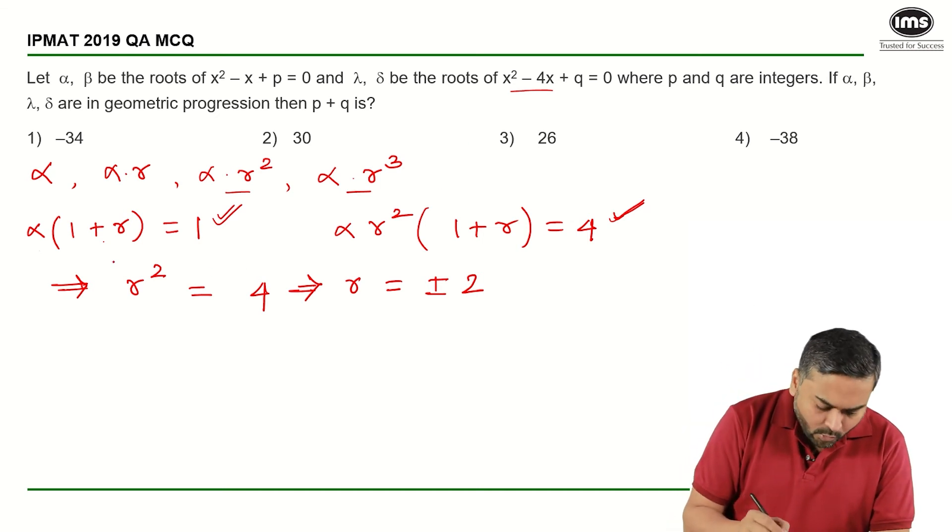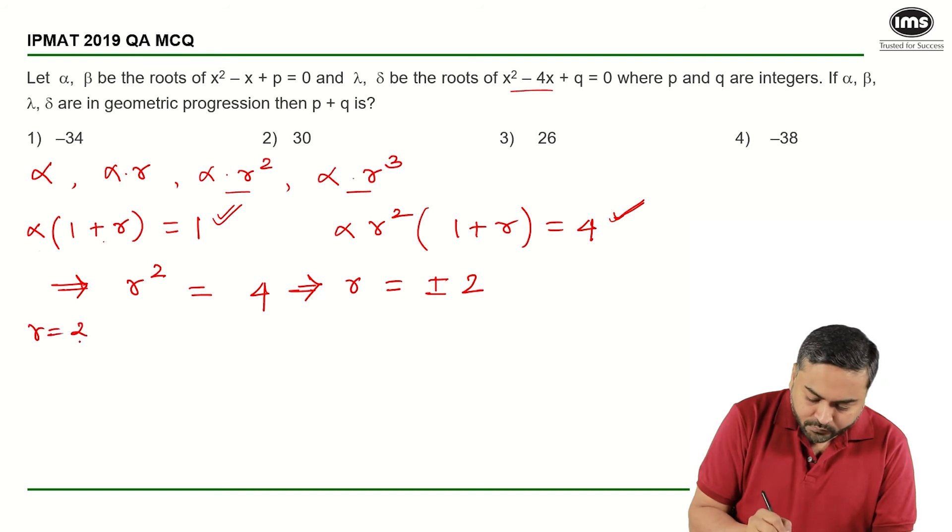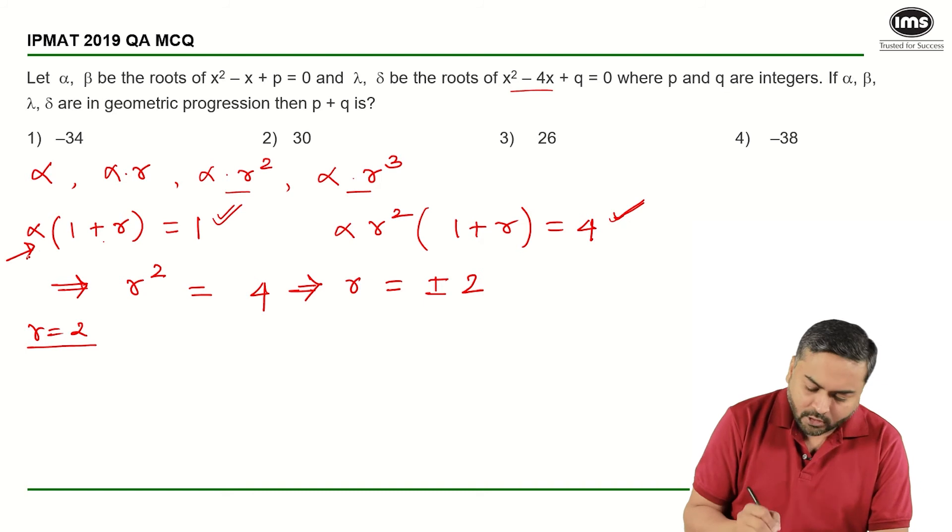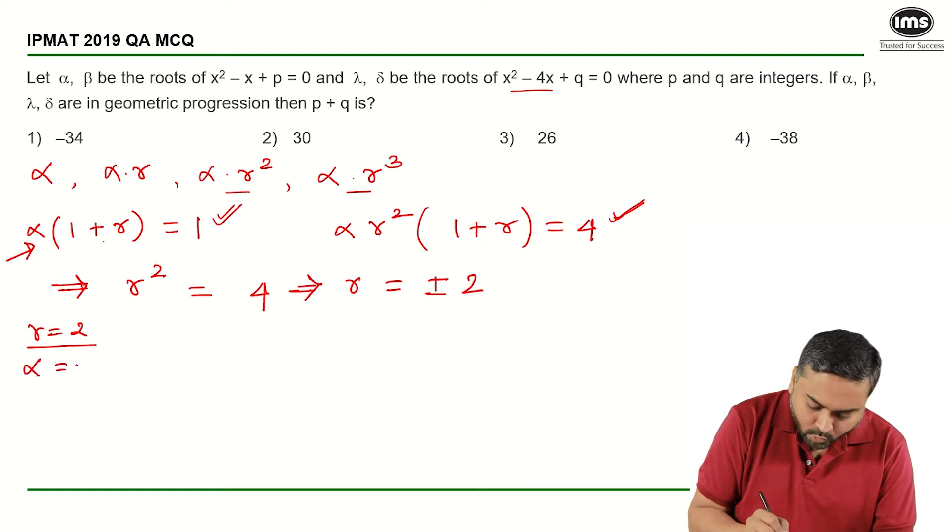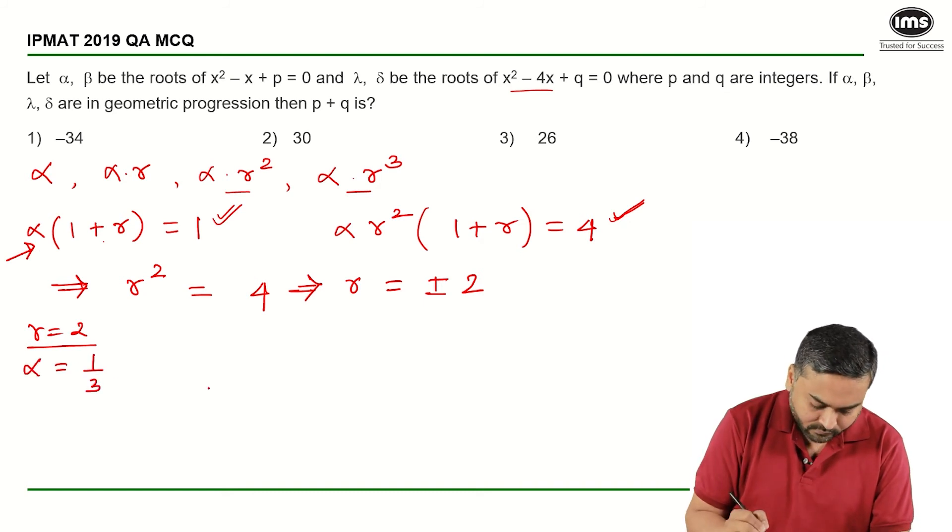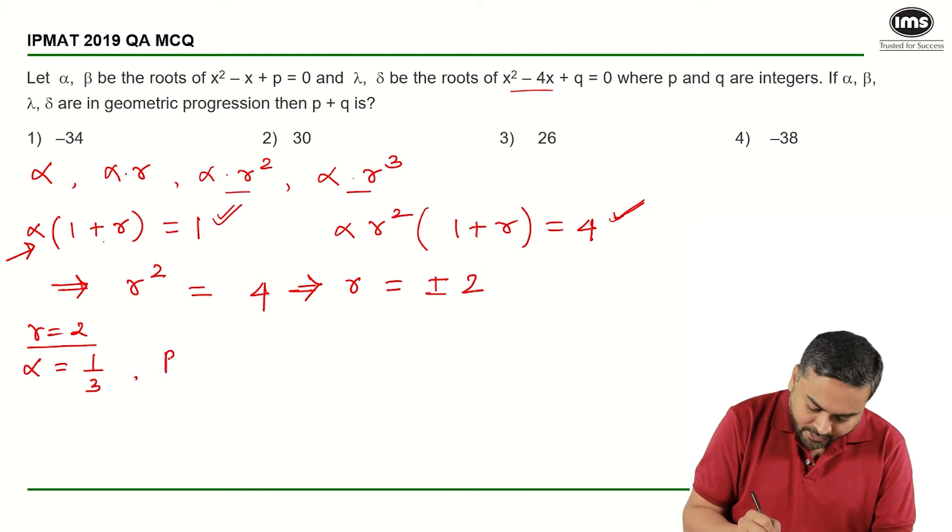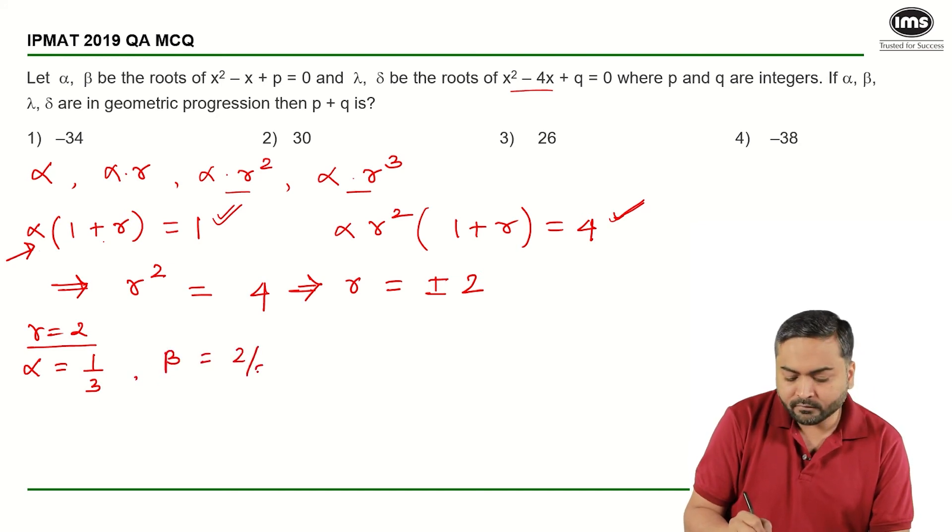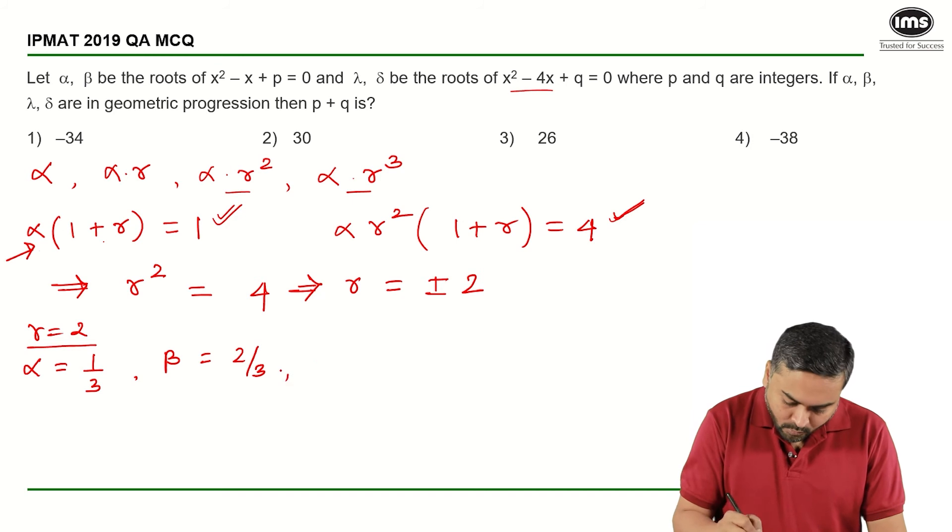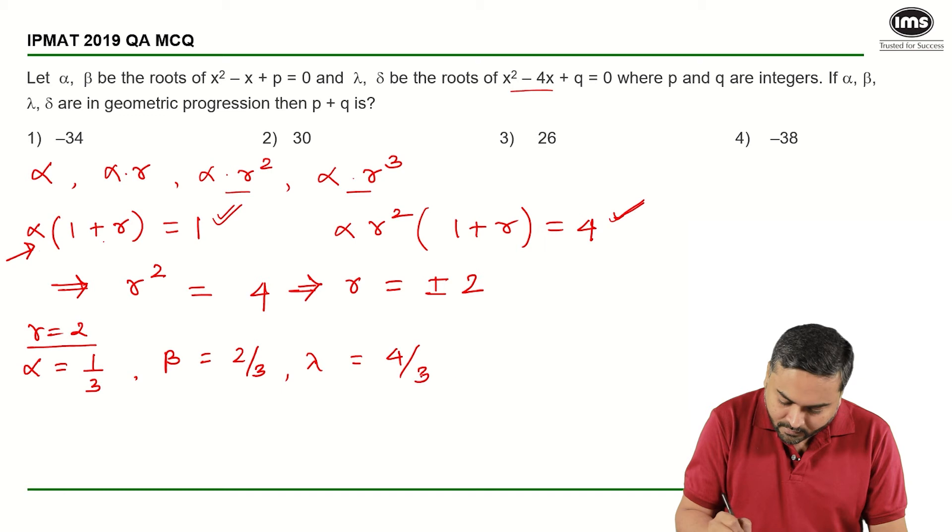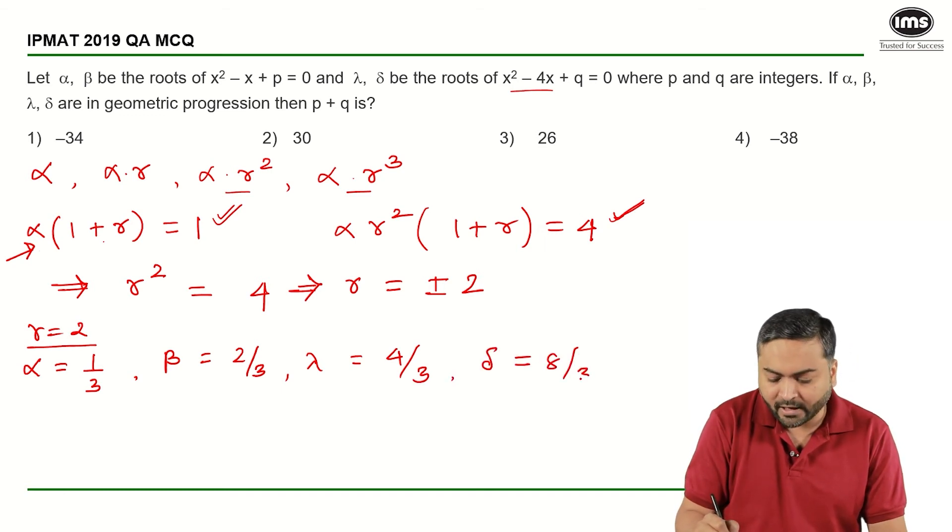If R is equal to 2, then substituting here, we get alpha is equal to 1 by 3, beta is equal to 2 by 3, gamma is equal to 4 by 3 and delta is equal to 8 by 3.